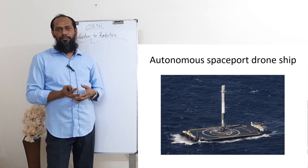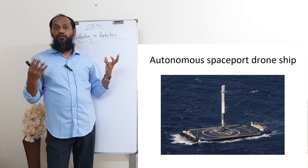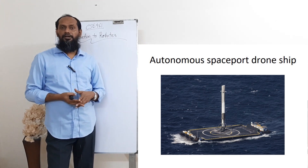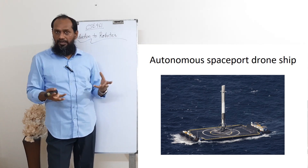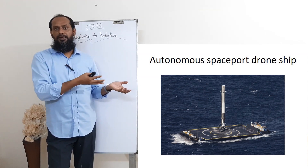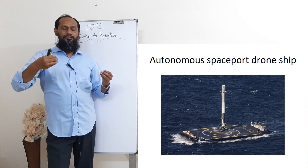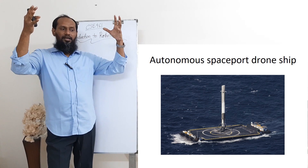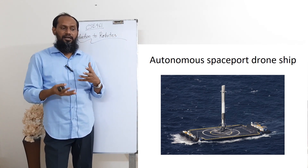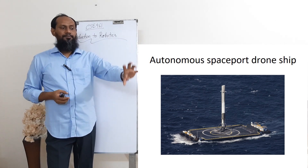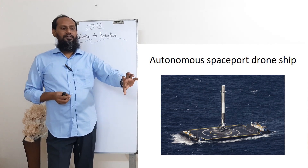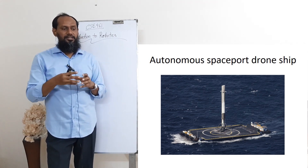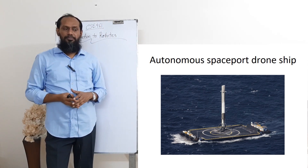This is the autonomous spaceport drone ship. SpaceX became popular because they made things cheaper. Before SpaceX, NASA would build rockets that were just destroyed after one use. But SpaceX reuses their rockets — the rocket cylinder autonomously lands on a ship on the water surface, which they call the spaceport drone ship. The ship can also move according to the information, and the rocket can land on that ship.